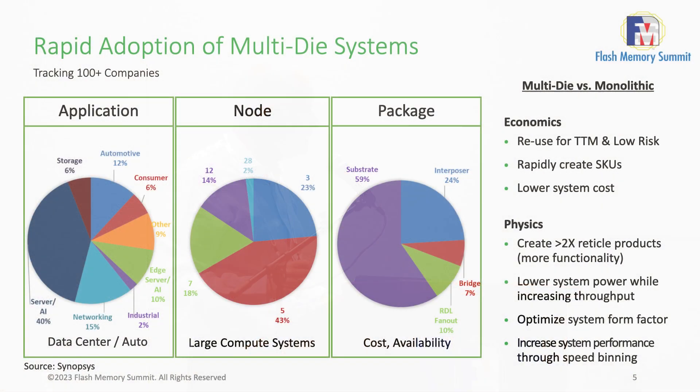Most cases today are still looking at substrate-type packages. What's interesting is the emergence of new packaging technologies — fan-out technologies and silicon bridge type technologies — which bridge the gap between substrate and interposer. They give high density and high performance packaging approximating what an interposer can deliver, but at a much lower cost, approaching the substrate side. We expect to see more adoption of these package types as a way to give higher density and performance at a more relevant price point.